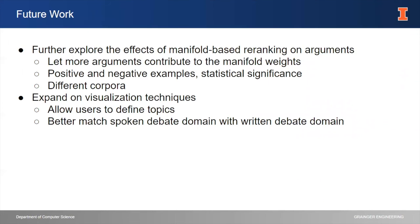For future work, we'd like to explore the effects of this manifold-based re-ranking more thoroughly — for example, letting more arguments contribute to the manifold weights, such as assuming the top five or top ten are relevant, or running it over the whole corpus. We also want to incorporate positive and negative examples, look at statistical significance between the runs, and explore this approach over different corpora like TREC or MS MARCO.